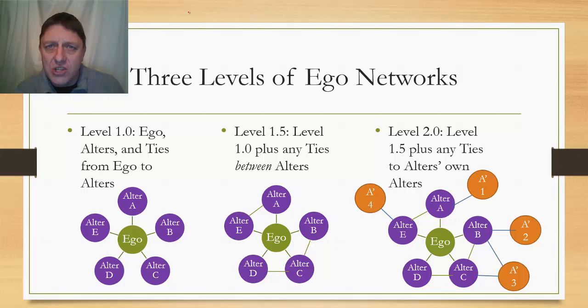So if we only ask ego that question, and ego names a set of alters with whom ego, say, plays tennis, then we have a level 1.0 ego network in which we just have ego and alters, and the ties just from ego to alters. So it's going to look like a starfish. It's going to look like a star. Level 1.5, representing a little bit of an addition, says, well, let's take level 1.0, and then let's add ties between alters. So if, in this case, as you see, alter A and alter E also play tennis together, they will be tied. Alter B and alter C also play tennis together, so they will be seen as tied. Same with alter C and alter D. Alter A and alter D, however, in level 1.5, do not play tennis together, so there is no tie there.